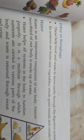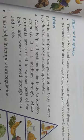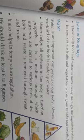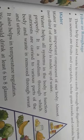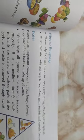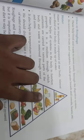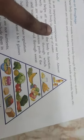The organs of the digestive system are: mouth, food pipe, gallbladder, stomach, small intestine, large intestine, rectum, and anus.